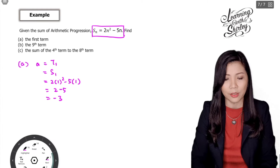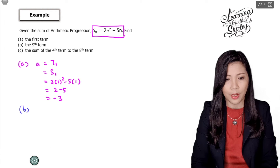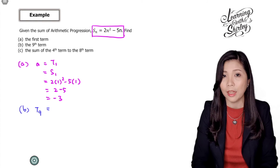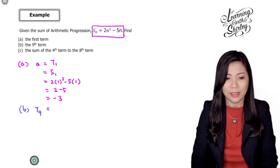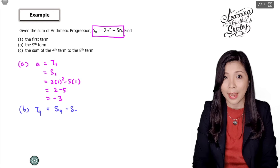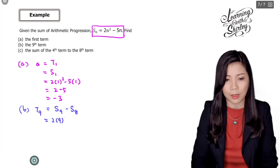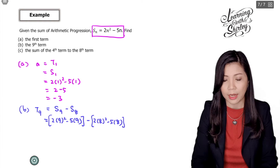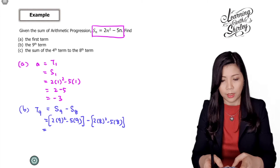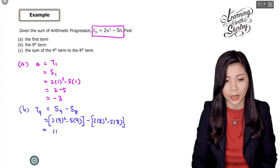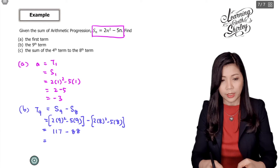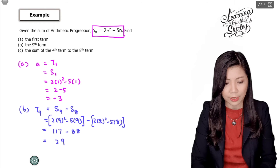To find the ninth term, use tn equals Sn minus Sn minus 1, so t9 equals S9 minus S8. Substituting into 2n² minus 5n: for S9, that's 2 times 81 minus 45 equals 117. For S8, that's 2 times 64 minus 40 equals 88. So 117 minus 88 equals 29. The answer for (b) is 29.